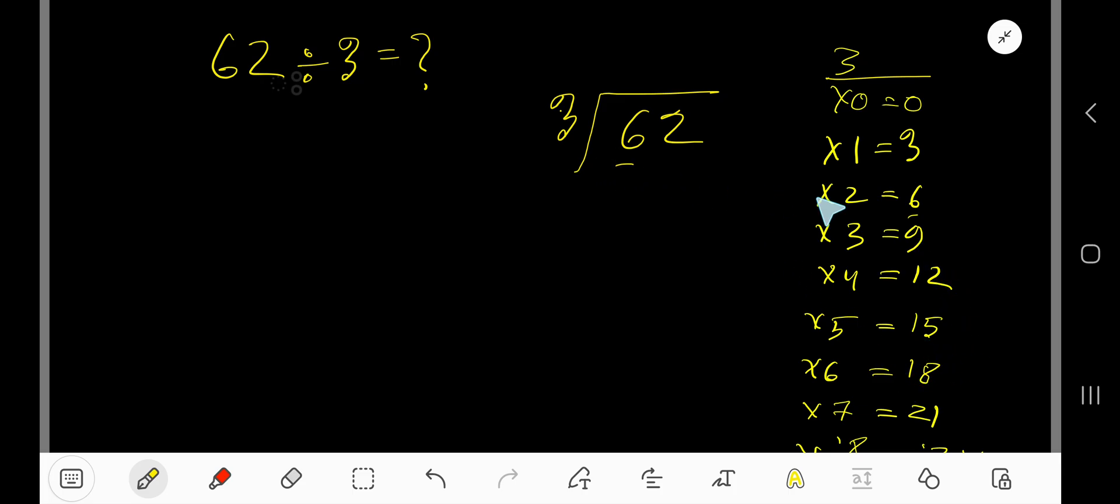So 3 goes into 6 how many times? 3 goes into 6 two times. 2 times 3 gives us 6. Subtract to get 0. Bring down this 2. 0, 2 means 2. 3 goes into 2 how many times?